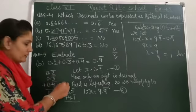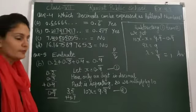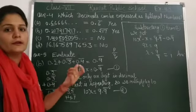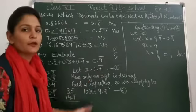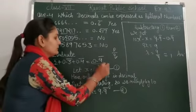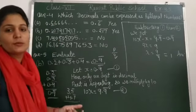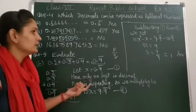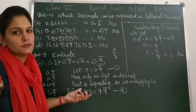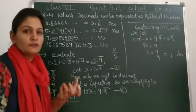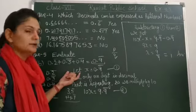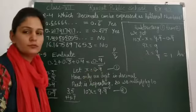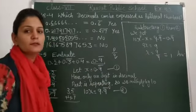So 2 plus 3 is 5, 5 plus 4 is 9. That is 0.9 bar. You have to solve this. Just like we did question number 3. Whatever the given value is, let x equal to the given value, 0.9 bar.